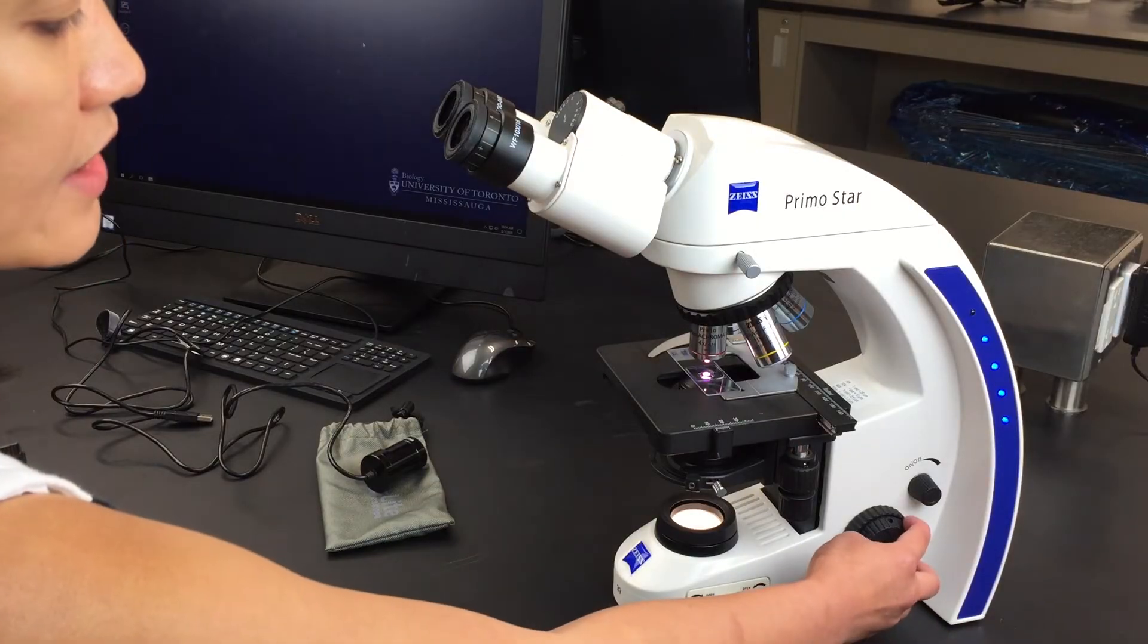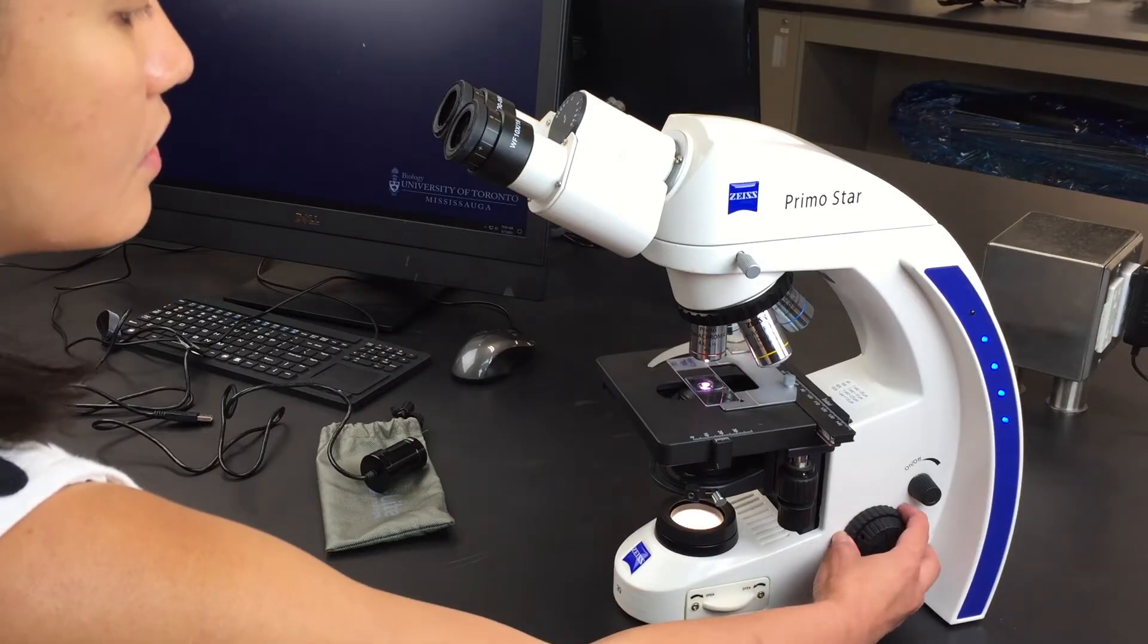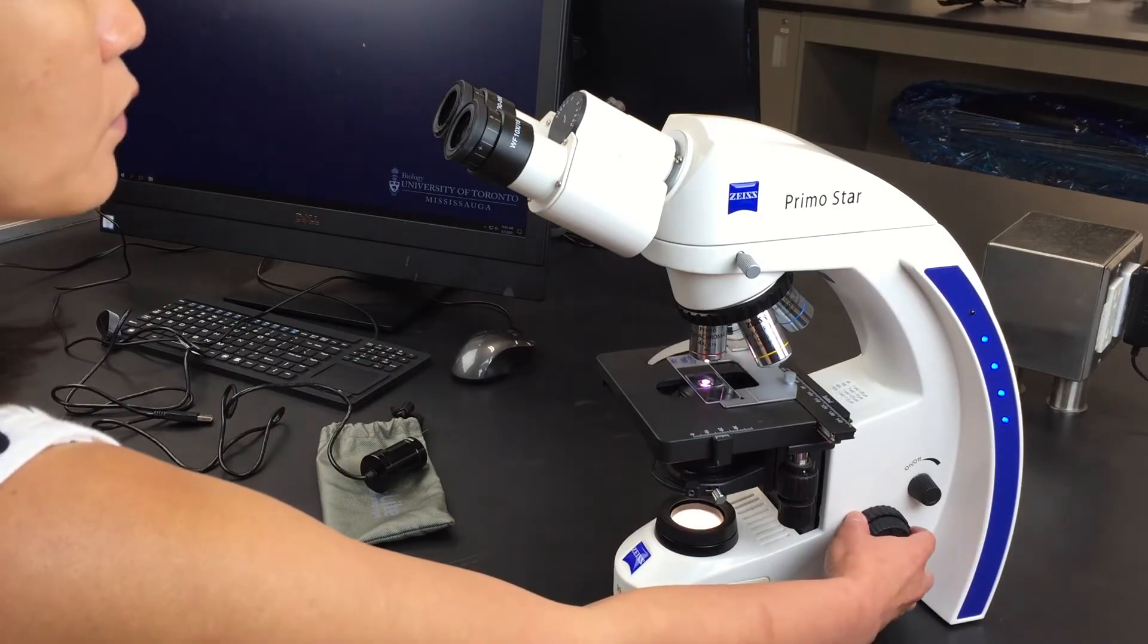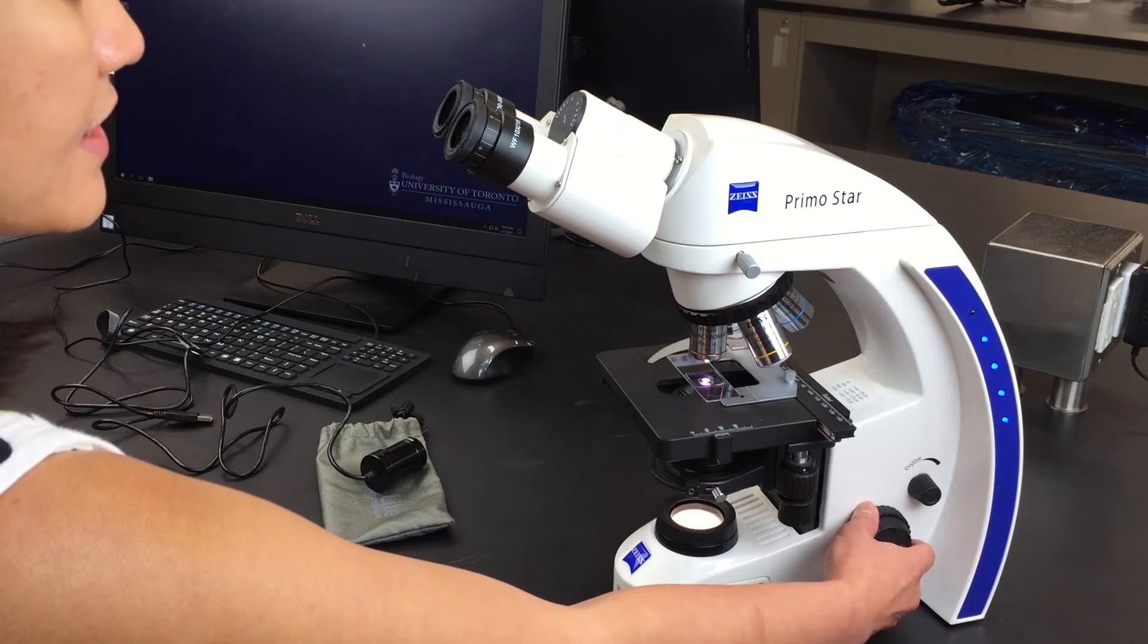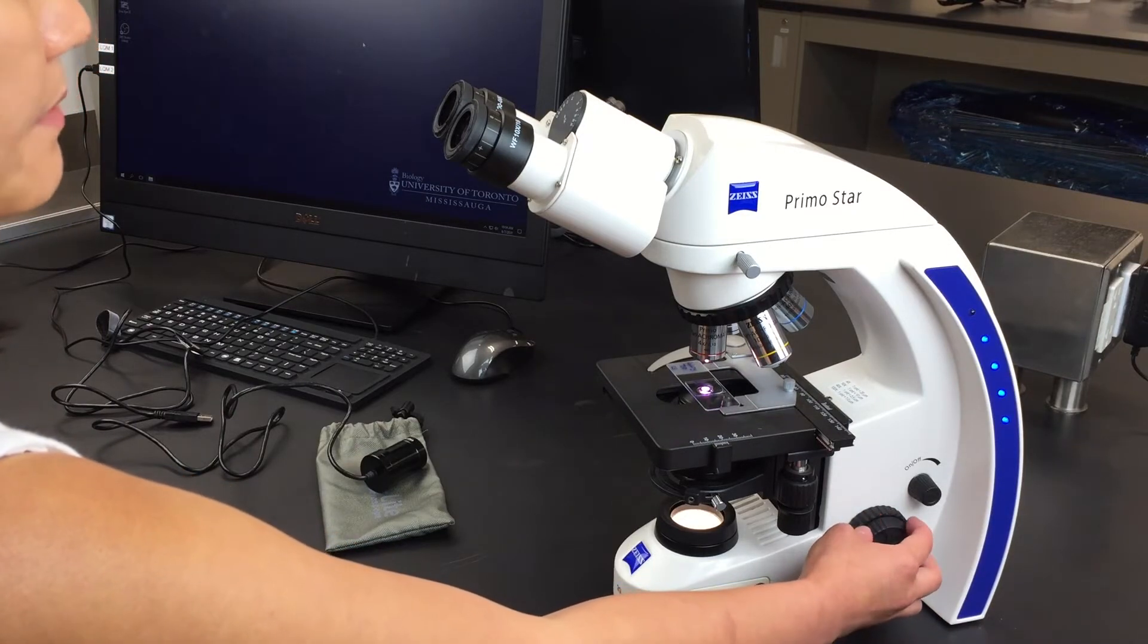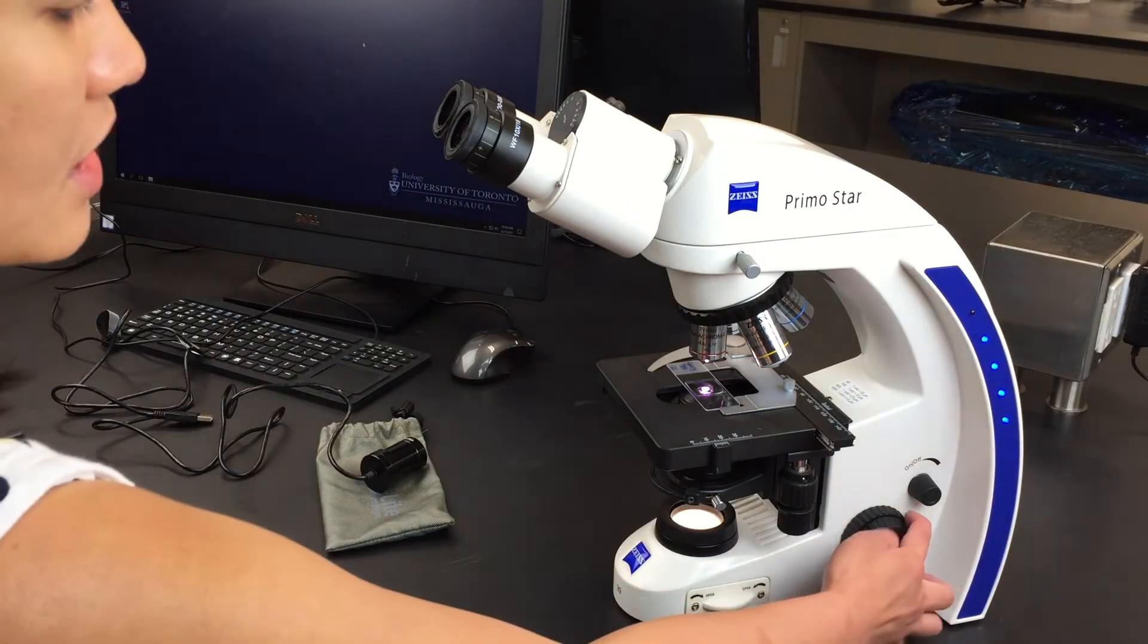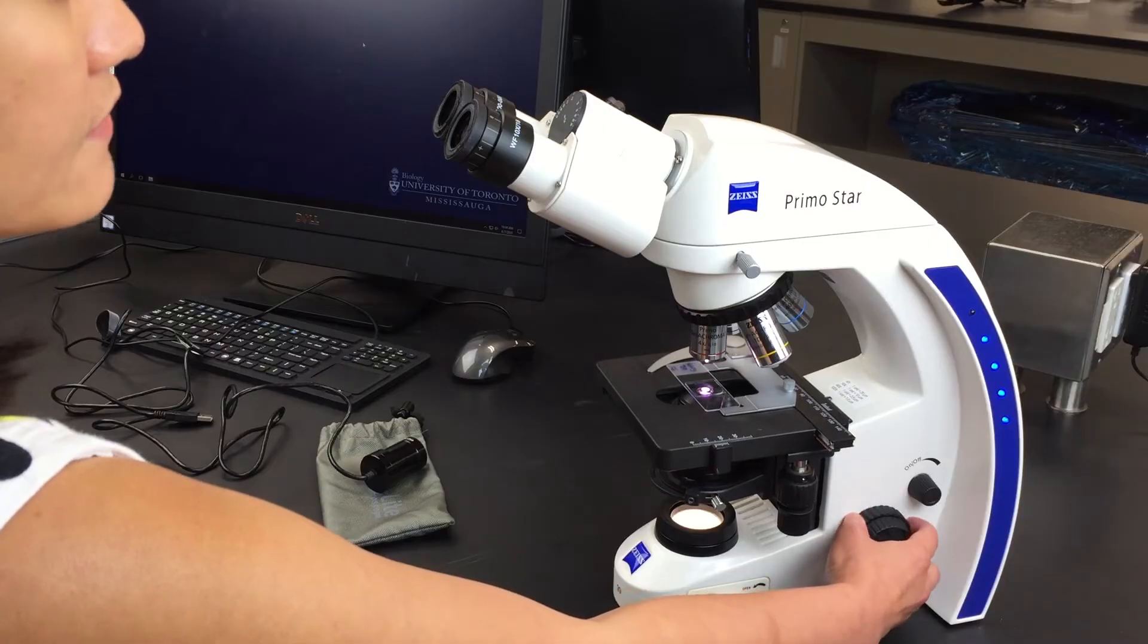There are two rings here. The inner bigger ring is the coarse adjustment, which moves the stage up and down. The outer smaller ring also moves the stage up and down, but to a lesser extent. You only use the coarse adjustment with the 4x objective.